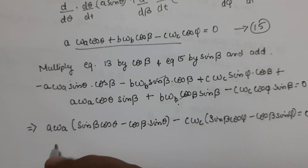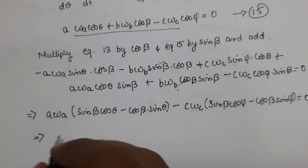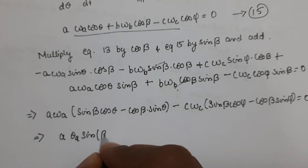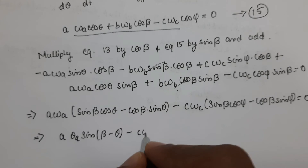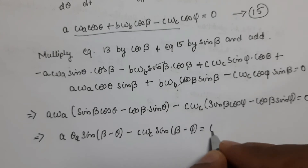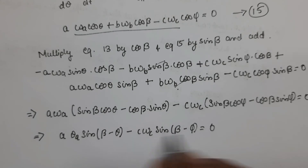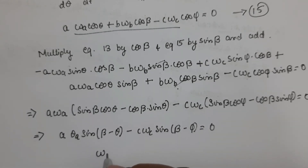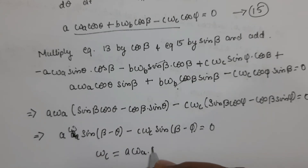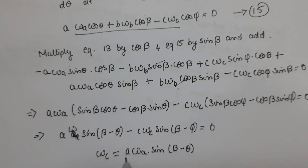Using the sine subtraction identity sin(A−B) = sinA·cosB − cosA·sinB, this simplifies to: a·ω_a·sin(β−θ) − c·ω_c·sin(β−φ) = 0. Therefore, ω_c = a·ω_a·sin(β−θ) / [c·sin(β−φ)].